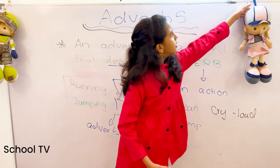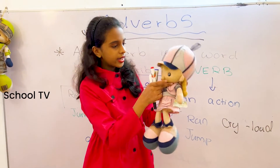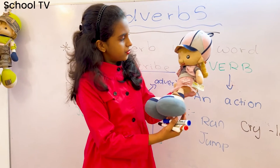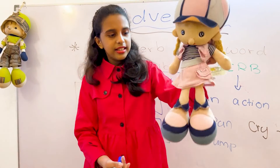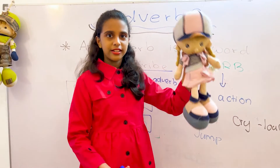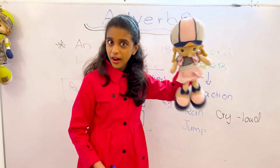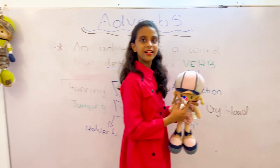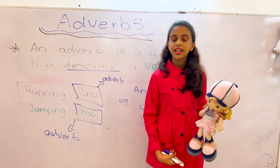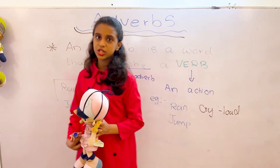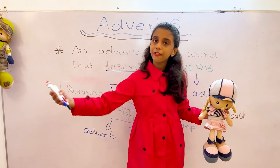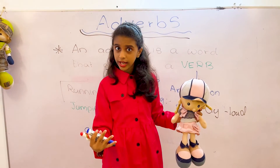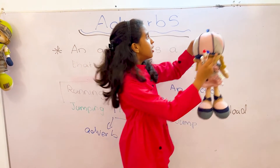If I take this girl, I can say this girl is walking fast. I am walking fast. If I go like this, I am walking slowly. If I go fast, I am walking fast. So what is the word we use to describe walking? We use fast to describe walking.